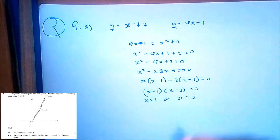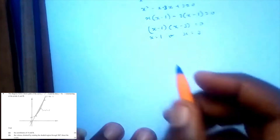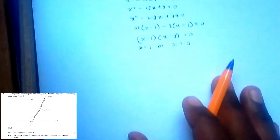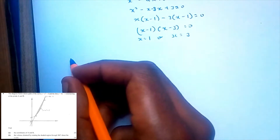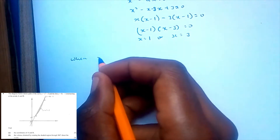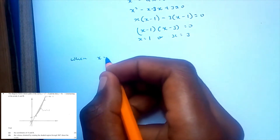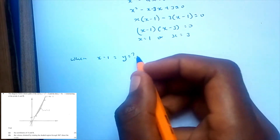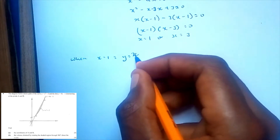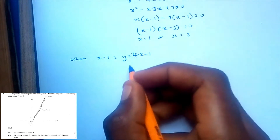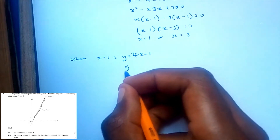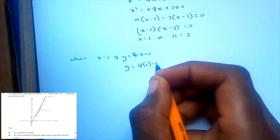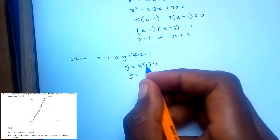Then we substitute into the equation to find our y-value. Our y-value when x is equal to 1: substituting into the equation x minus 4x minus 1, y is equal to 4 times 1 minus 1. So 4 minus 1 is just 3.